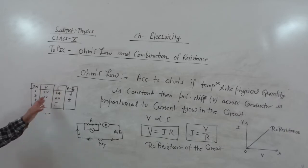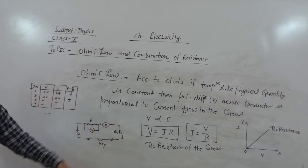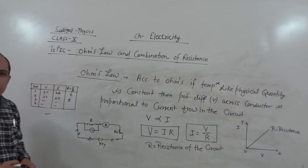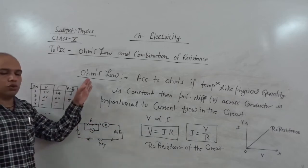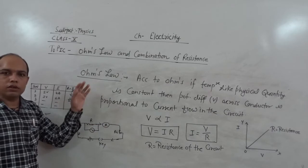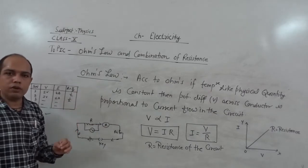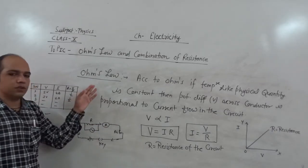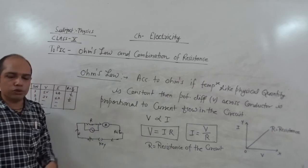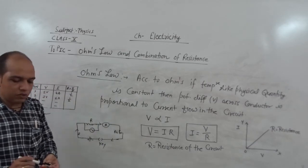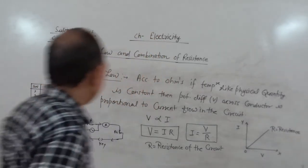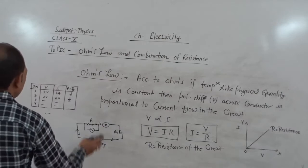When we plot the graph between voltage and current, it is again a straight line. Whenever a conductor follows Ohm's law, it is said to be an Ohmic substance. Most conductors follow Ohm's law, and that is why they are also called Ohmic substances or Ohmic conductors.